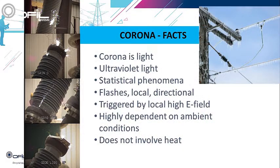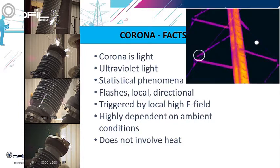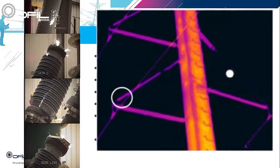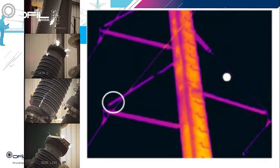Corona is highly dependent on ambient conditions. Temperature, humidity, and air pressure affect the acceleration and mobility of free electrons to collide with neutral molecules and excite them. It may therefore happen that a strong corona becomes extinct under certain ambient conditions. Corona does not dissipate heat, or very low heat, and therefore will not be depicted by thermal cameras — making IR cameras inefficient for corona detection.